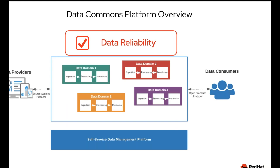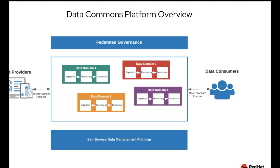For data comparability, we use a data mesh architecture, which essentially means that we empower different data domain owners to solve the problem on their own in a distributed and federated way. They can build their own pipelines, ingesting, processing, and distributing data in a fairly independent way, and they basically own data pretty much like a product. For reliability — this is interesting because typically in distributed systems you get a lot of agility, but the problem can be: how do you ensure that people follow a certain set of standards and also respect certain governance and security around data?